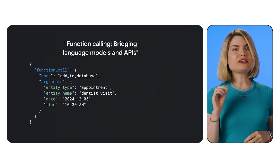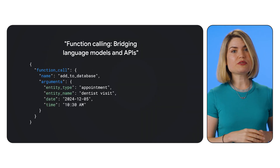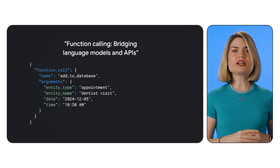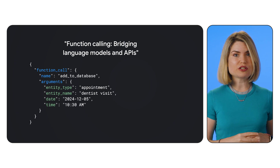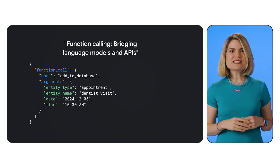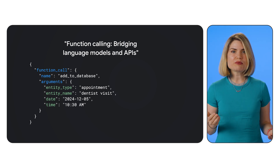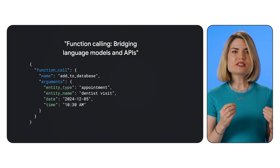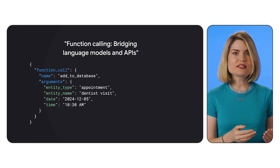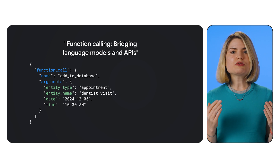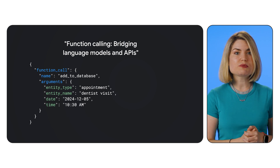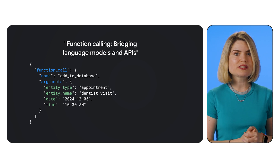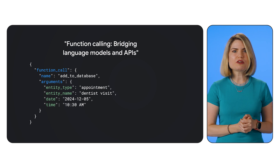Function calling enables Gemini to interact with the outside world by generating structured data that represents a function call. It's like sending instructions to another program. Instead of just giving you text, Gemini can now tell you to run specific functions with specific inputs. It's all about making your language models more actionable.